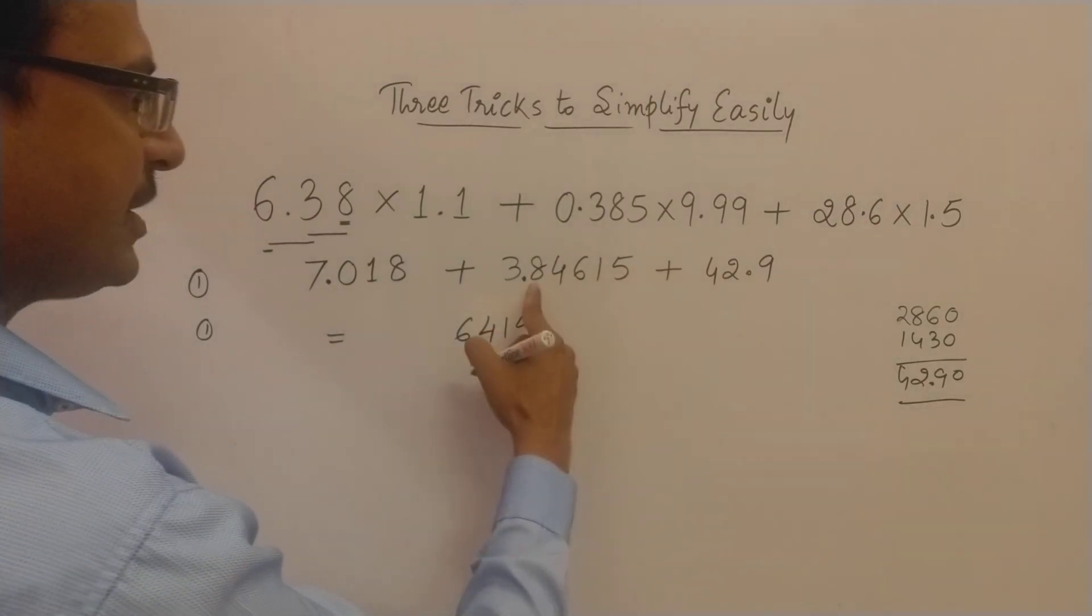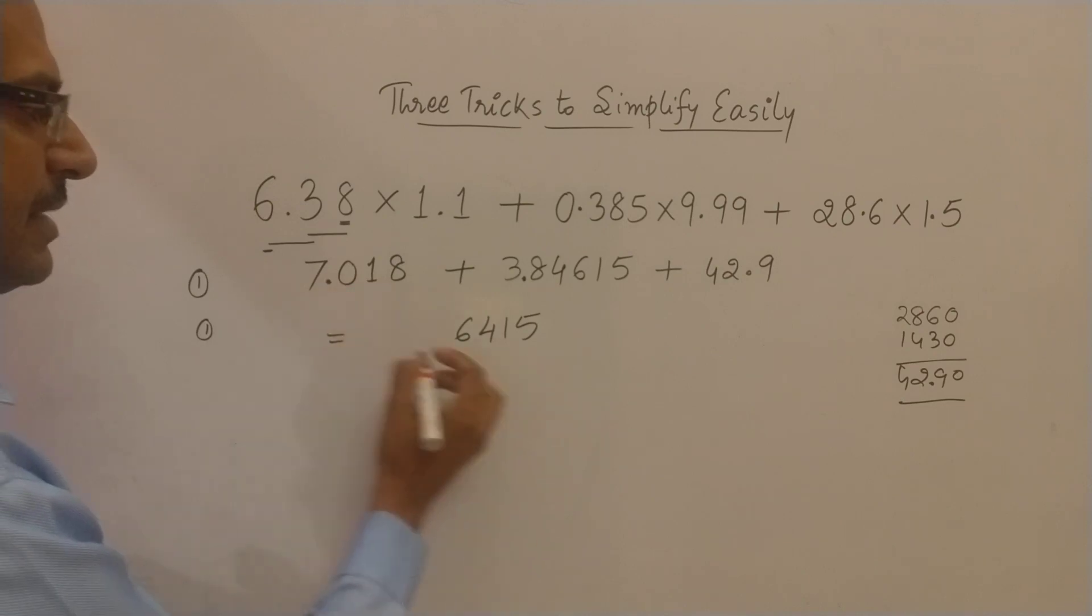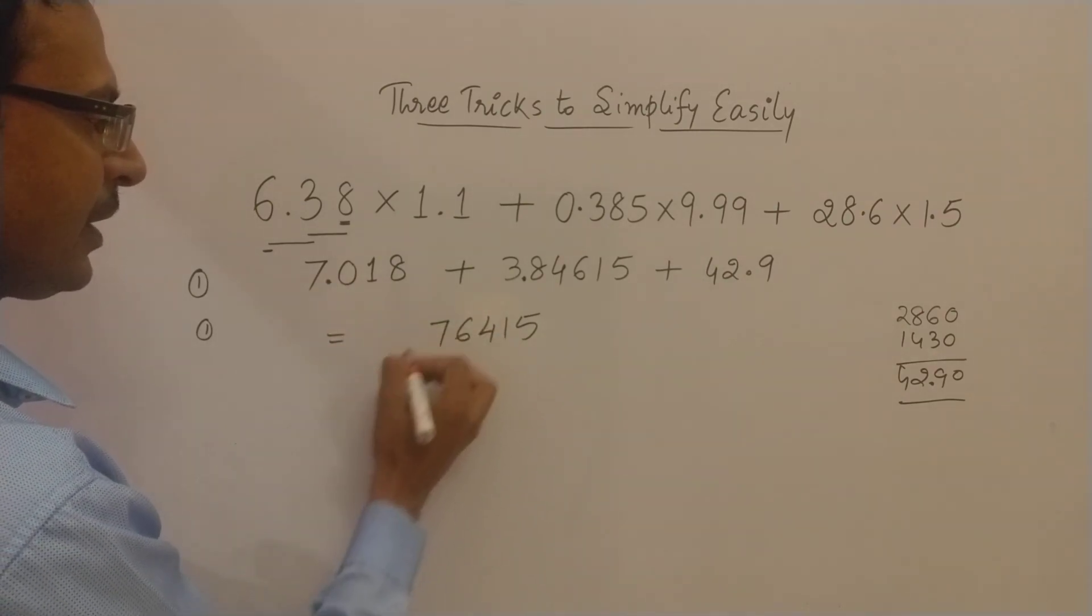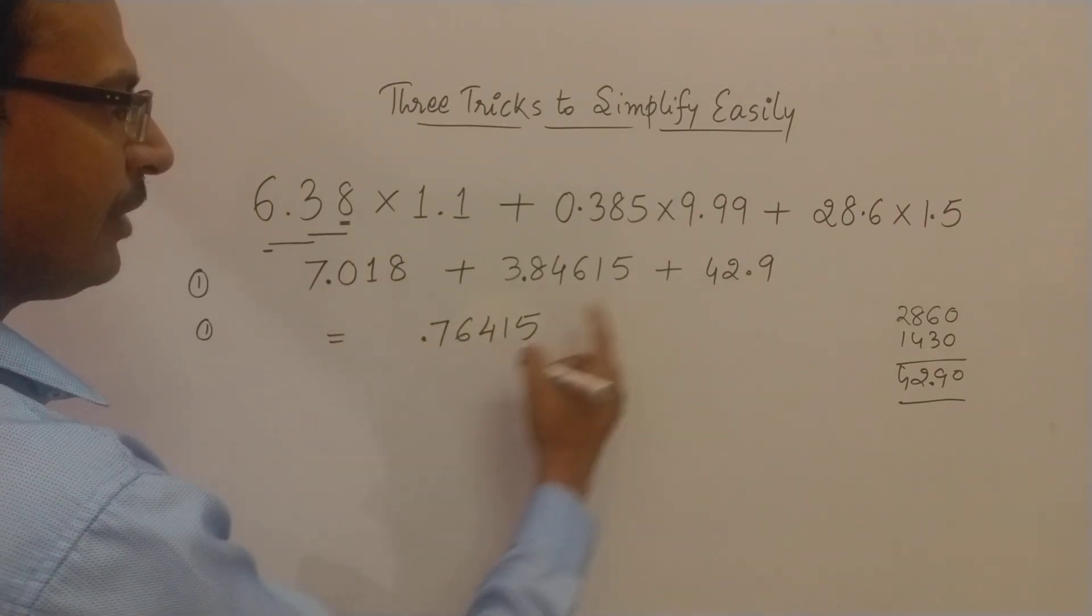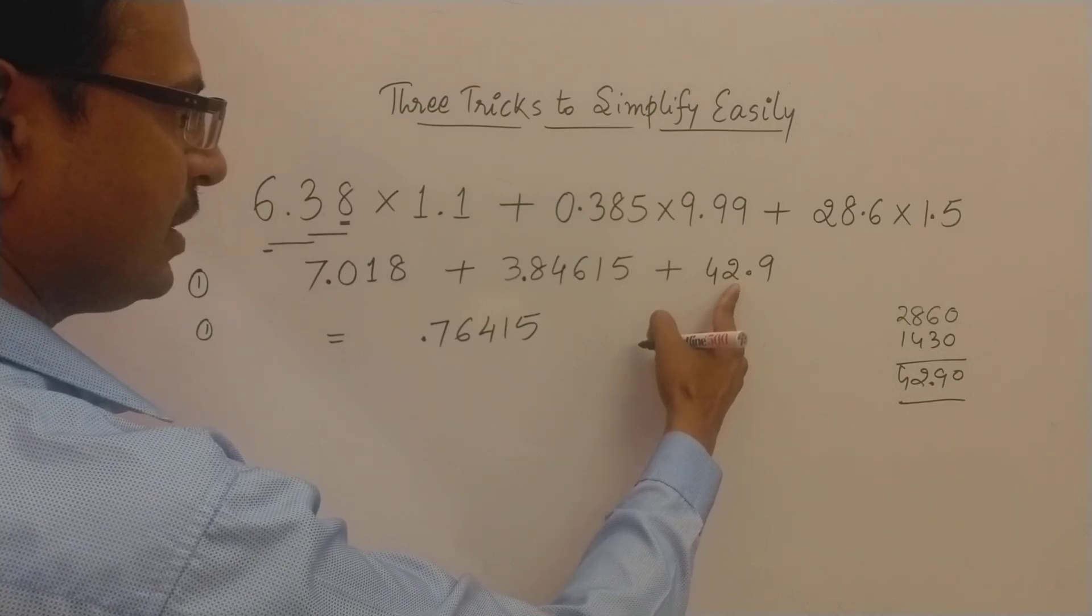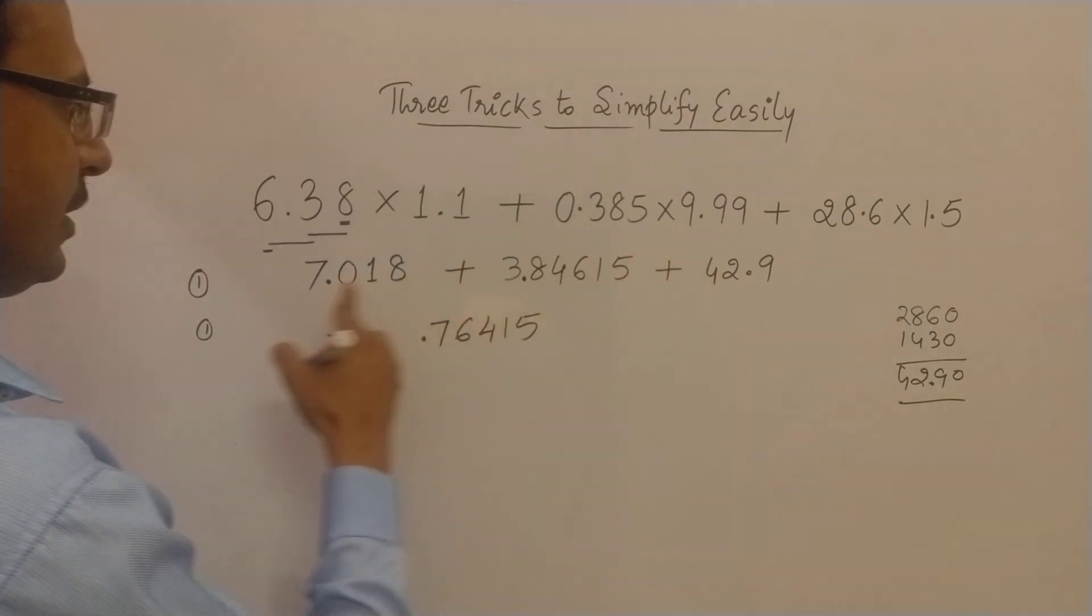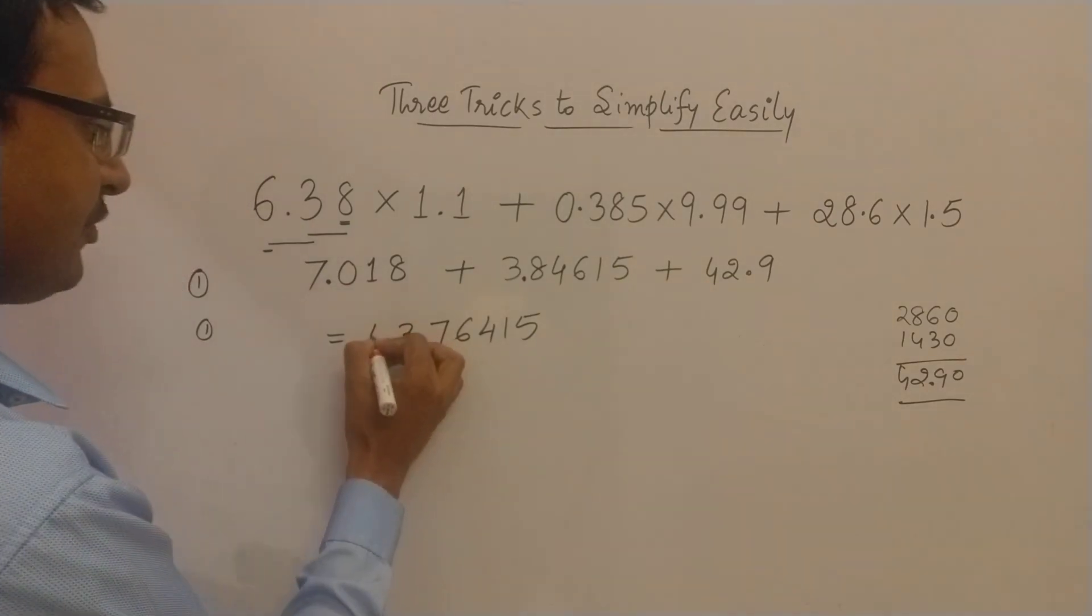So 9, 9 plus 8 is 17, 17 plus 0 is 17 itself. So 7, and now 1 carry. 1 carry means 3. 3 and 10, 13. So we have 3 and again 1 carry. So 4 plus 1, 5.